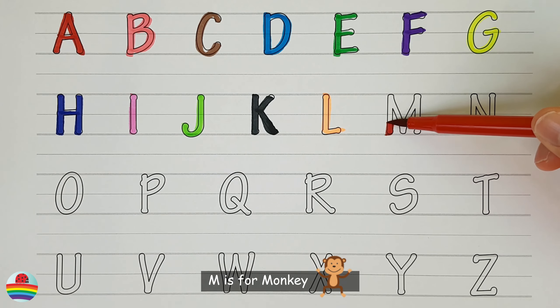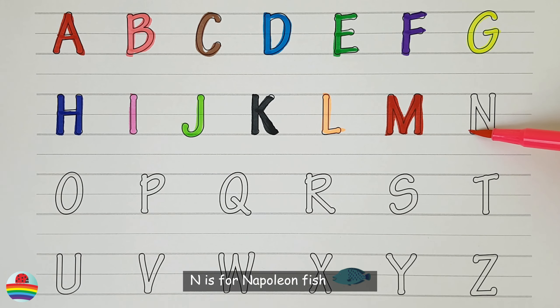M. M is for monkey. N. N is for napoleon fish.